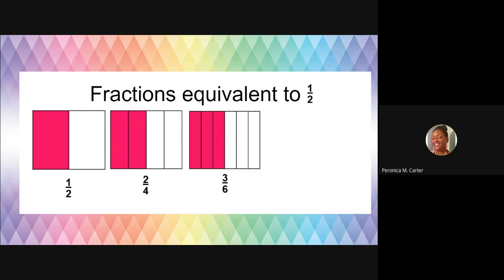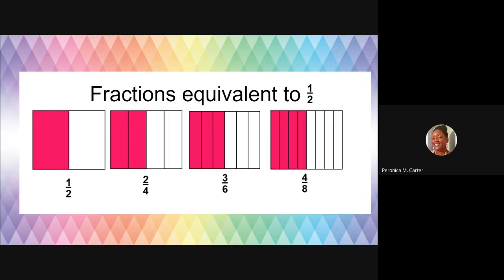Then we can partition it a different way, where it's partitioned into three parts for a half and three parts for the other half, so that would represent three of six — three sixths. It could be subdivided even more into four of eight parts. Notice that the pink section has the same amount. Whether we partition it more or not, the section is still a half of that whole.